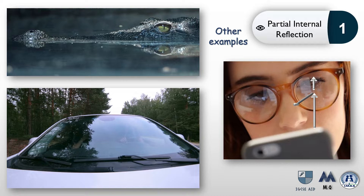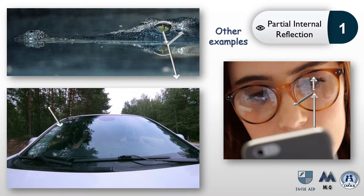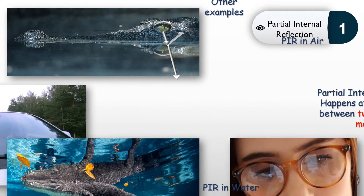Similarly, in the alligator picture, part of the incident ray from the alligator's eye is internally reflected in air towards the camera, while the remaining part is transmitted into the water. In the car picture, light from the environment hits the windshield, gets transmitted to the people inside, yet some is reflected towards the camera — that's why you can see the image of the environment on the windshield.